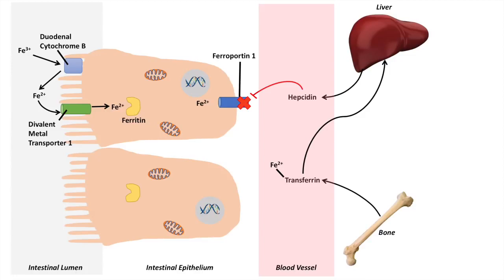What happens to the iron then? Your iron continually gets taken up into the enterocyte through divalent metal transporter 1 — enterocytes continually uptake iron. If ferroportin 1 is inhibited, that iron doesn't go anywhere; it stays in the enterocyte. The enterocytes actually get sloughed off and replaced every three days, so that iron within the enterocytes gets excreted in your feces. If iron is not taken up into the blood, it stays in your enterocytes and is excreted in your feces.